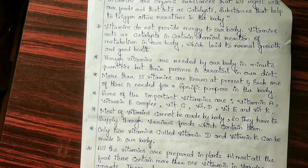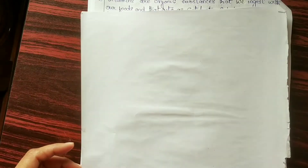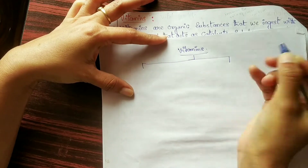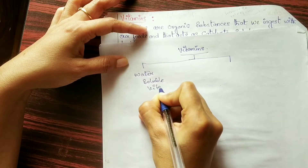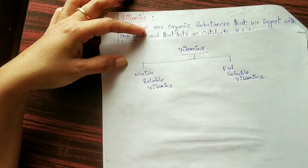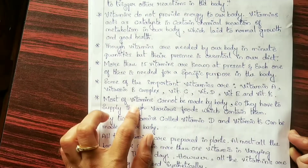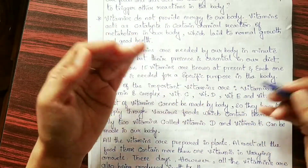Some of the important vitamins are vitamin A, vitamin B, vitamin B complex, vitamin C, vitamin D and vitamin E. Vitamins are divided into two types: water-soluble vitamins and fat-soluble vitamins. Most vitamins cannot be made by our body, so they have to be supplied through various foods.